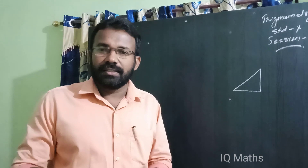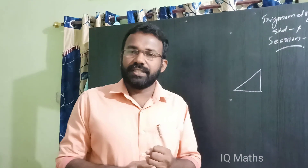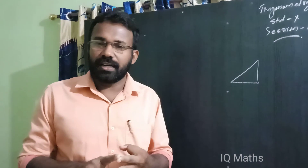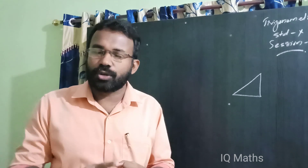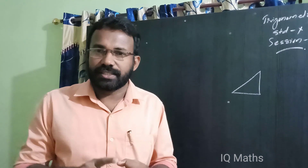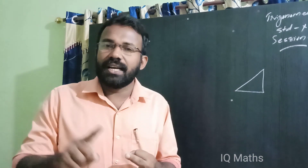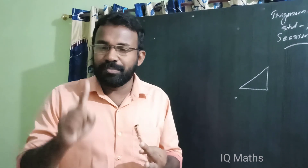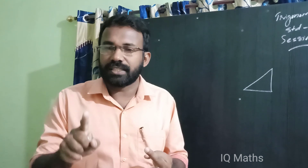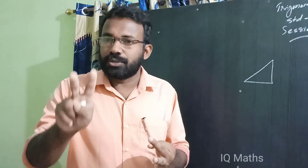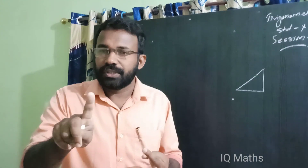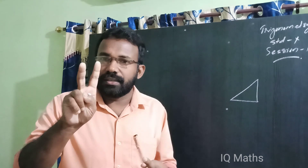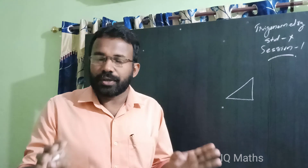According to angles, triangles are three types. First is acute-angular triangle. Second is right-angular triangle. Third is obtuse-angular triangle. In an obtuse-angular triangle, one angle is obtuse. In a right-angular triangle, one angle is 90 degrees. In an acute-angular triangle, all three angles are acute.